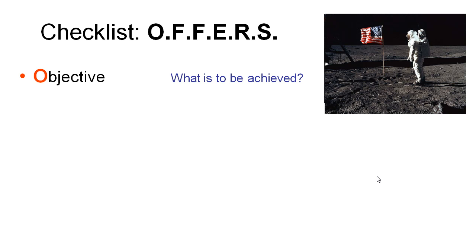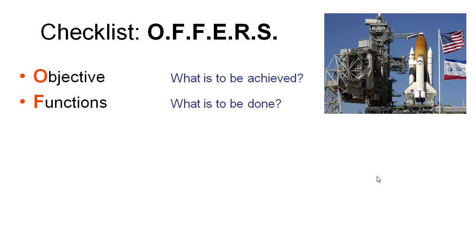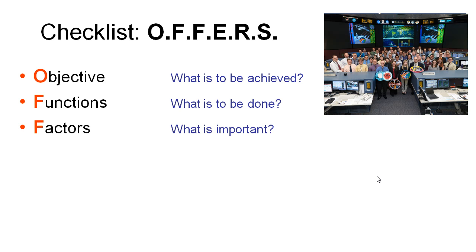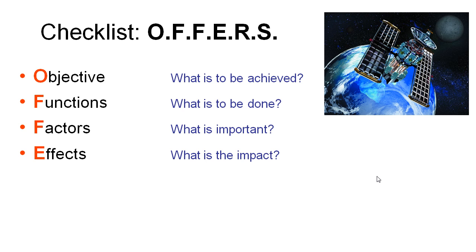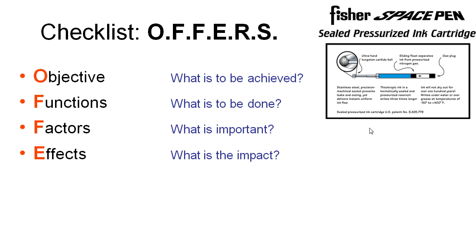The O is the first element and that is the Objective — what is the objective we want to achieve in solving this problem? The first F stands for Functions — what is it that needs to be done, and what functions do we need to fulfill to support the achievement of our objective? Factors — what are the important factors surrounding this problem and how do they influence the functions and objectives? Effects — if we did come up with a good solution, what impact will it have on the wider community and business environment? For example, a satellite is one anticipated effect of a space program, but there may be several unanticipated effects such as a space pen or space food sticks.